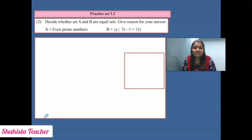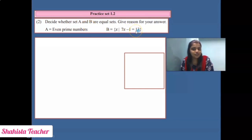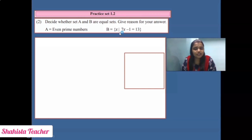Now let's solve Practice Set 1.2, question number 2: Decide whether Set A and Set B are equal sets. Give reason for your answer. Set A carries even prime numbers, whereas Set B carries one equation. After solving both, we check whether the answers are equal.